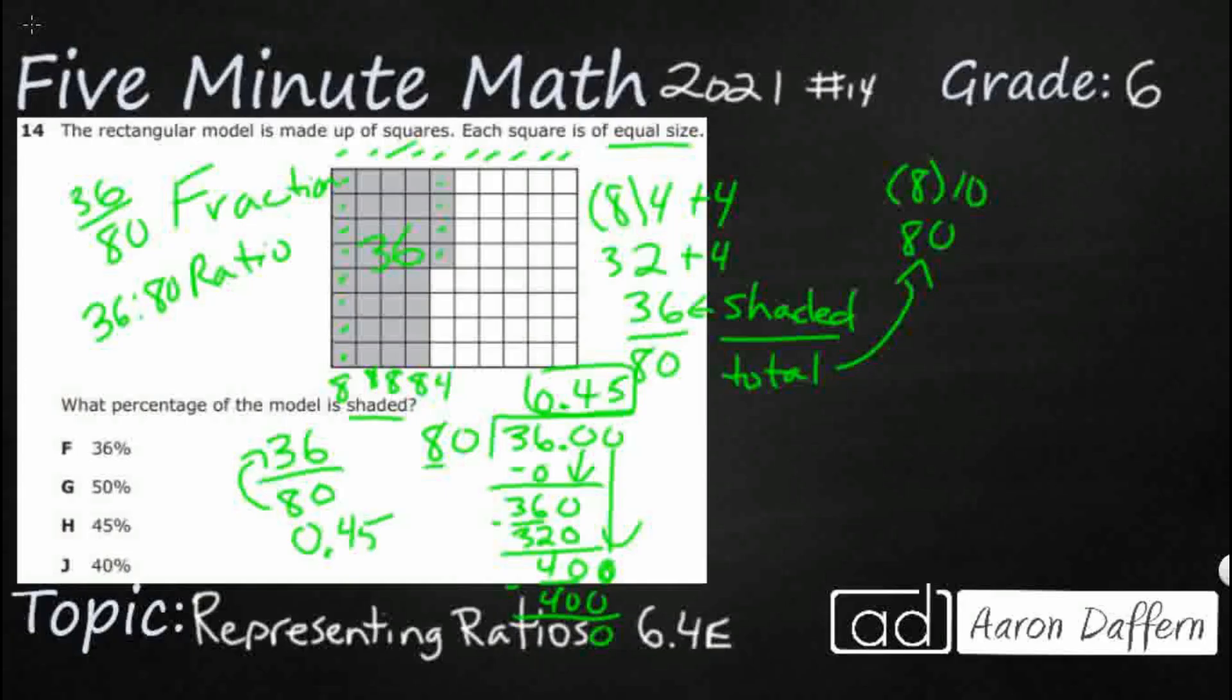Another thing we could do, if we wanted to, we could take our 36 80ths. We could try to reduce it. Sometimes it helps, sometimes it doesn't. So they're both even. Let's divide by 2s. We're going to get 18 over 40. Even again. Divide by 2s. We're going to get 9 20ths. It kind of helps us. We can multiply by 5s. It's going to get 45 over 100. Either way, you're going to move the decimal twice. Answer is 45%.